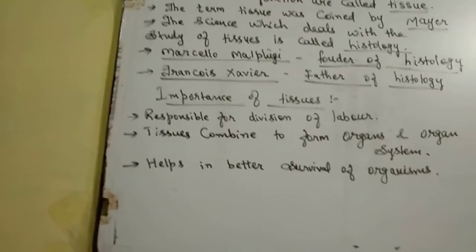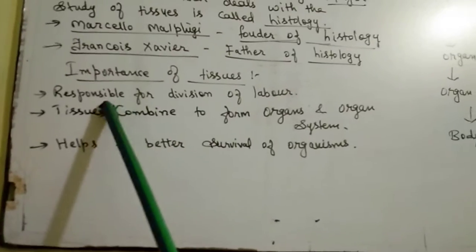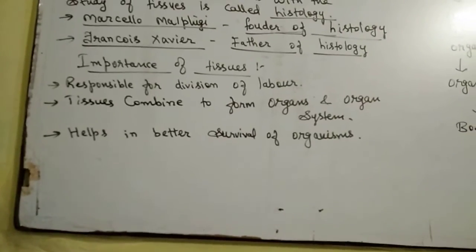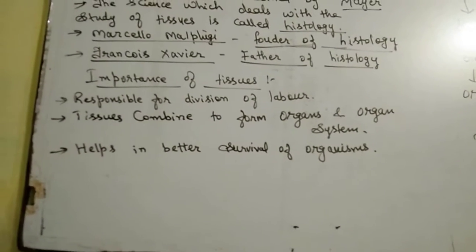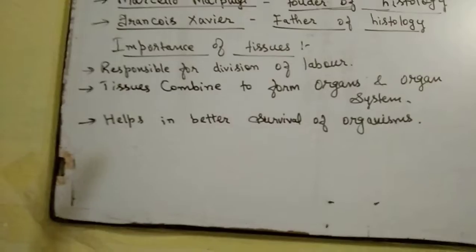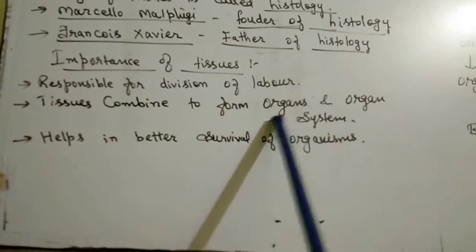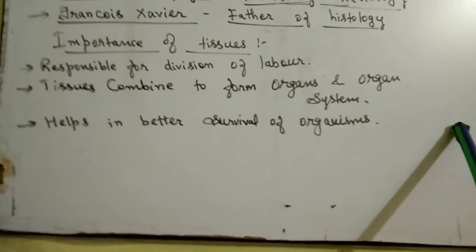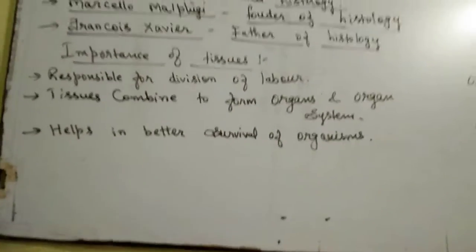This is the importance of tissue. The key points are: first, tissue is responsible for division of labor, which is the main function of tissue. Next, tissues combine to form organs and organ systems. And finally, tissue helps in the better survival of the organism.